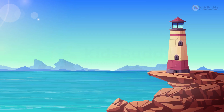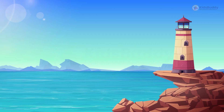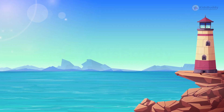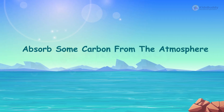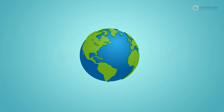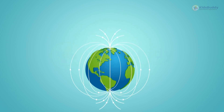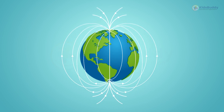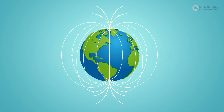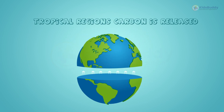Look at the ocean. Oceans and other large water bodies which have cool water on their surface also absorb some carbon from the atmosphere. Oceans exhibit dual behavior — when the surface water is cool near the poles, carbon is absorbed into the water; when the surface water is warm near the tropical regions, carbon is released into the atmosphere.